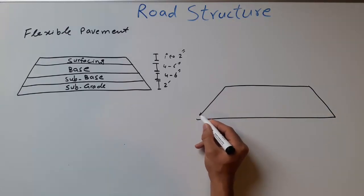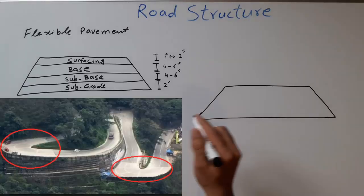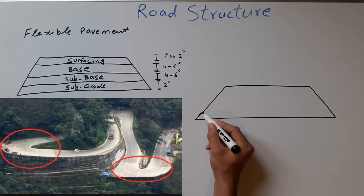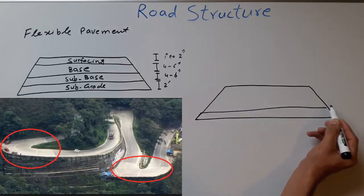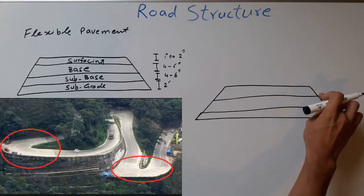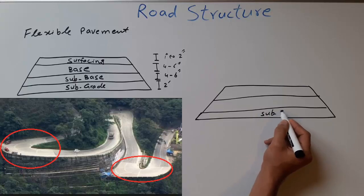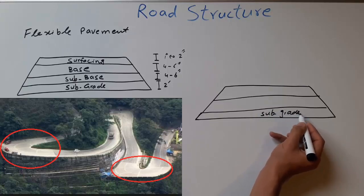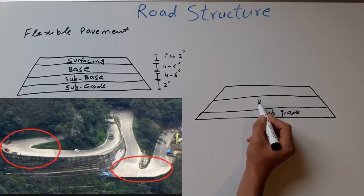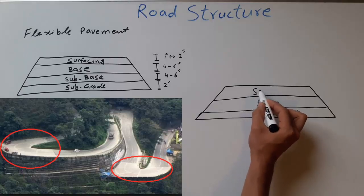The second type is rigid pavement. We call it rigid pavement because we use concrete in this road. We have three main layers for this road: subgrade, base, and surfacing.